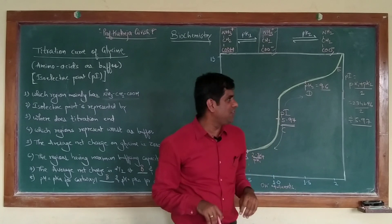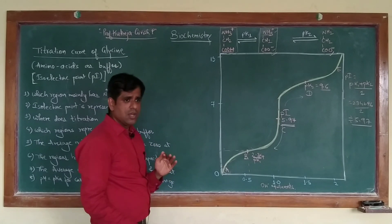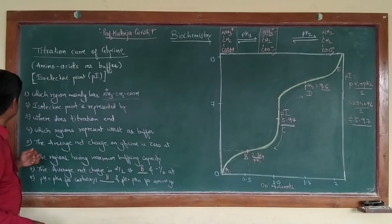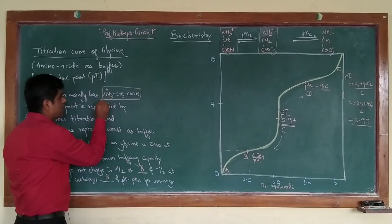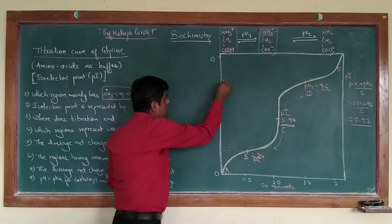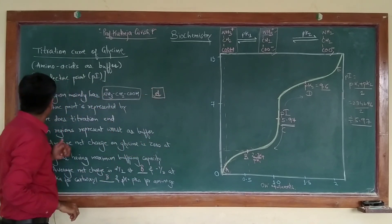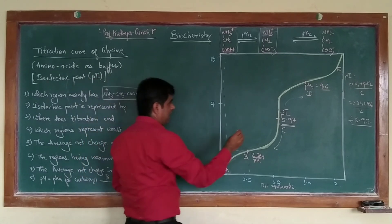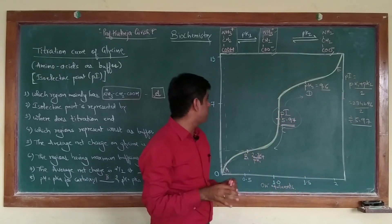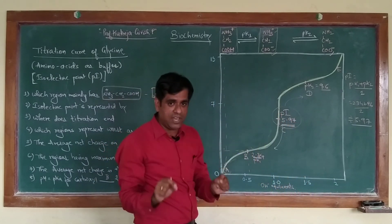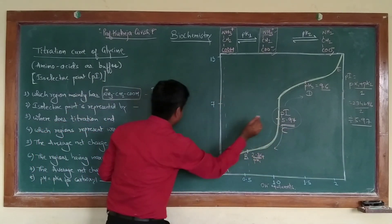Let us have an overview of some questions to check whether we have understood the titration of glycine with NaOH. The first question asks which region mainly has the fully protonated form — the fully protonated form corresponds to region A. The isoelectric point is the point at which the net charge on the amino acid is 0; the zwitterionic form where the amino acid is not mobile in an electric field, called the isoelectric point, is represented by point C.